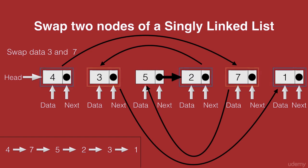So our swapping has now been completed. We have the head node 4, the next of 4 pointing to 7, the next of 7 pointing to 5, the next of 5 pointing to 2, the next of 2 pointing to 3, and finally the next of 3 pointing to 1.